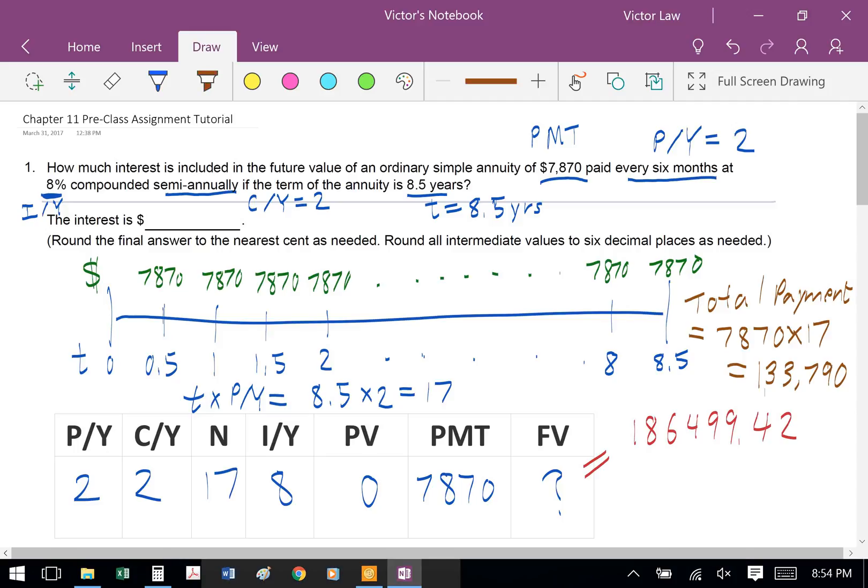To calculate the total interest, we need to first find the total payment. Total payment is 17 payments times $7,870 for each payment. When we multiply these two numbers together, we get $133,790.